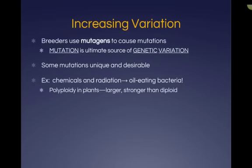Breeders can also increase variation, which is a very good thing in biology. The way we do that is by using mutagens to cause mutations. A mutation is the ultimate source of genetic variation — it scrambles up the DNA, creating new genes and traits in different orders, or mixing up alleles and the ways traits are expressed. Not all mutations are bad; some mutations make new, unique, desired traits. Some biologists actually expose organisms to chemicals and radiation to induce mutations.